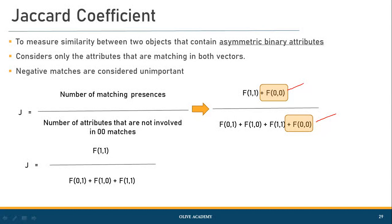We do not have to consider the 0,0 cases because none of them bought anything in those cases. What we are really interested in is whatever is bought by John but not by Nancy, and whatever is bought by Nancy but not by John. As per the Jaccard definition, negative matches are considered unimportant and we consider only attributes that are positively present in either vector.